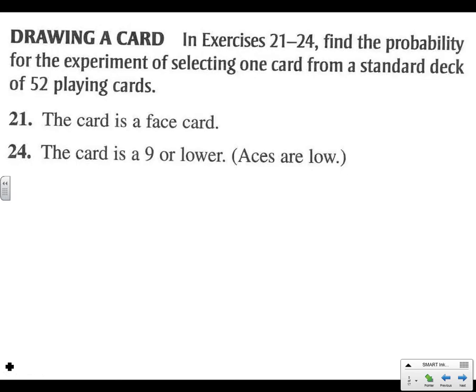Twenty-four: Find the probability for the experiment selecting one card from a standard deck of 52 playing cards. The card is nine or lower, and that includes the aces. Well, if we just think about one suit, there are 13 cards in a suit. And if we say nine or lower, our probability is nine out of 13. If we were looking at the whole deck, it would be 36 out of 52, but just look at each suit. Each suit has 13 cards.